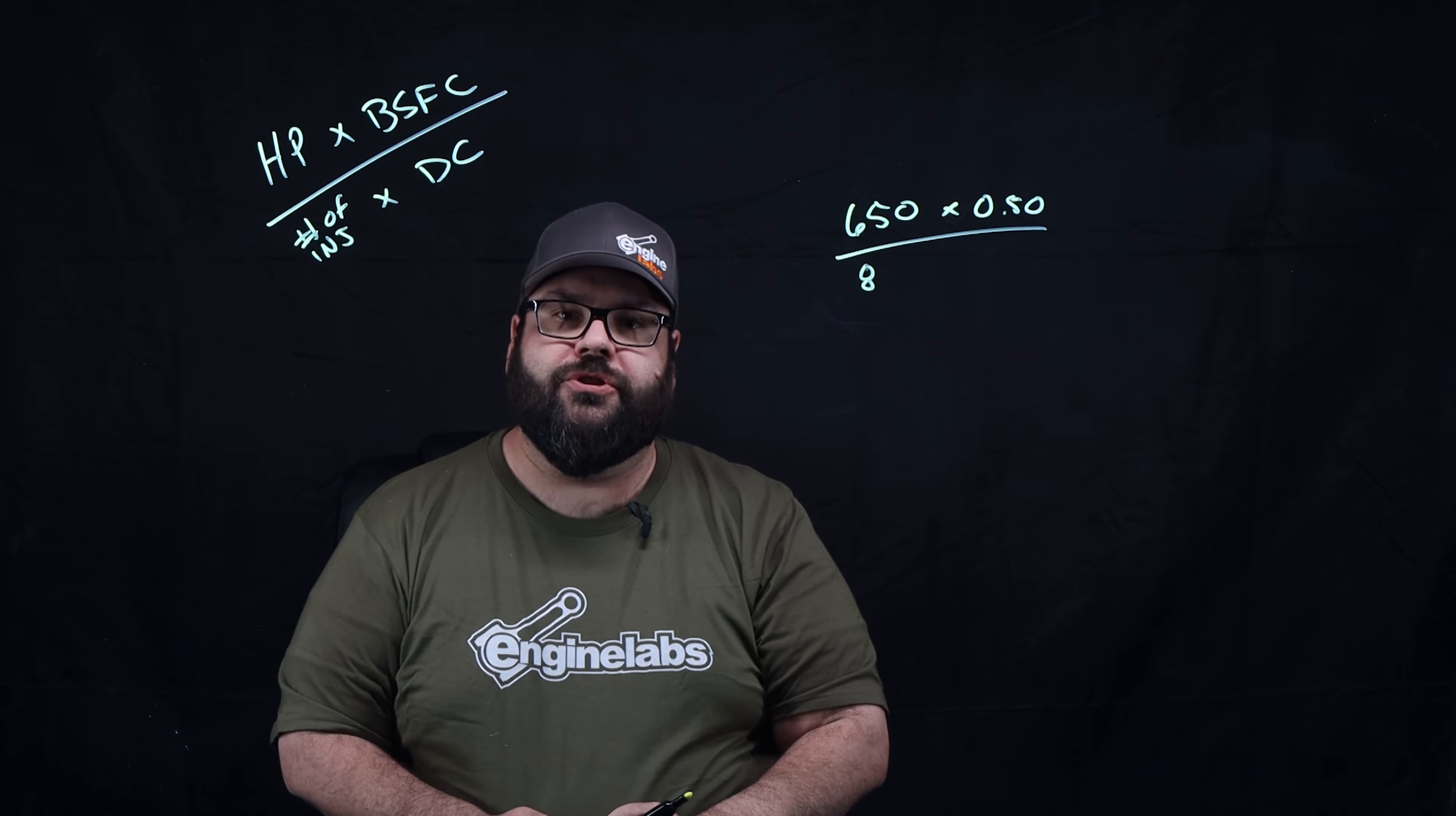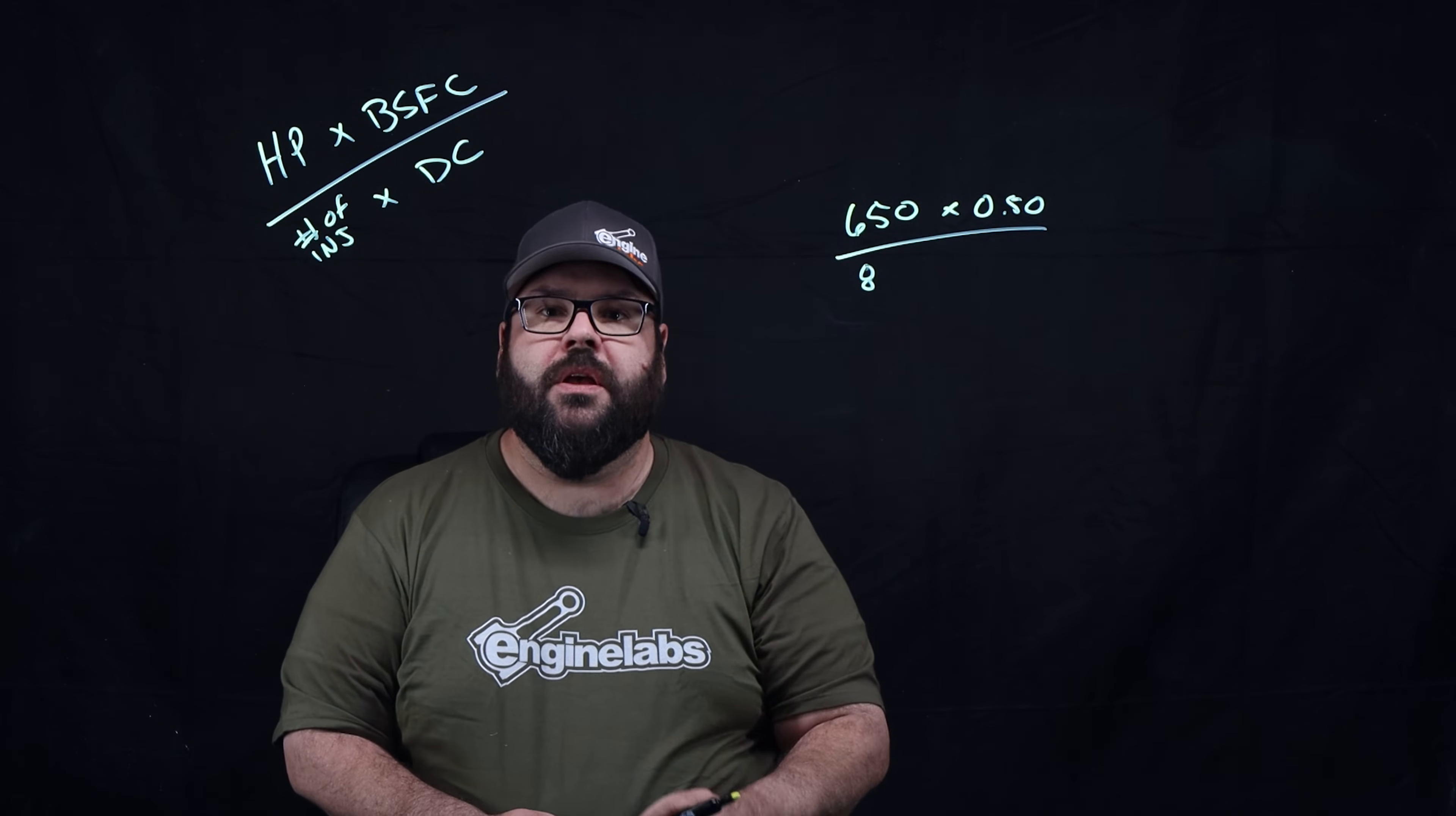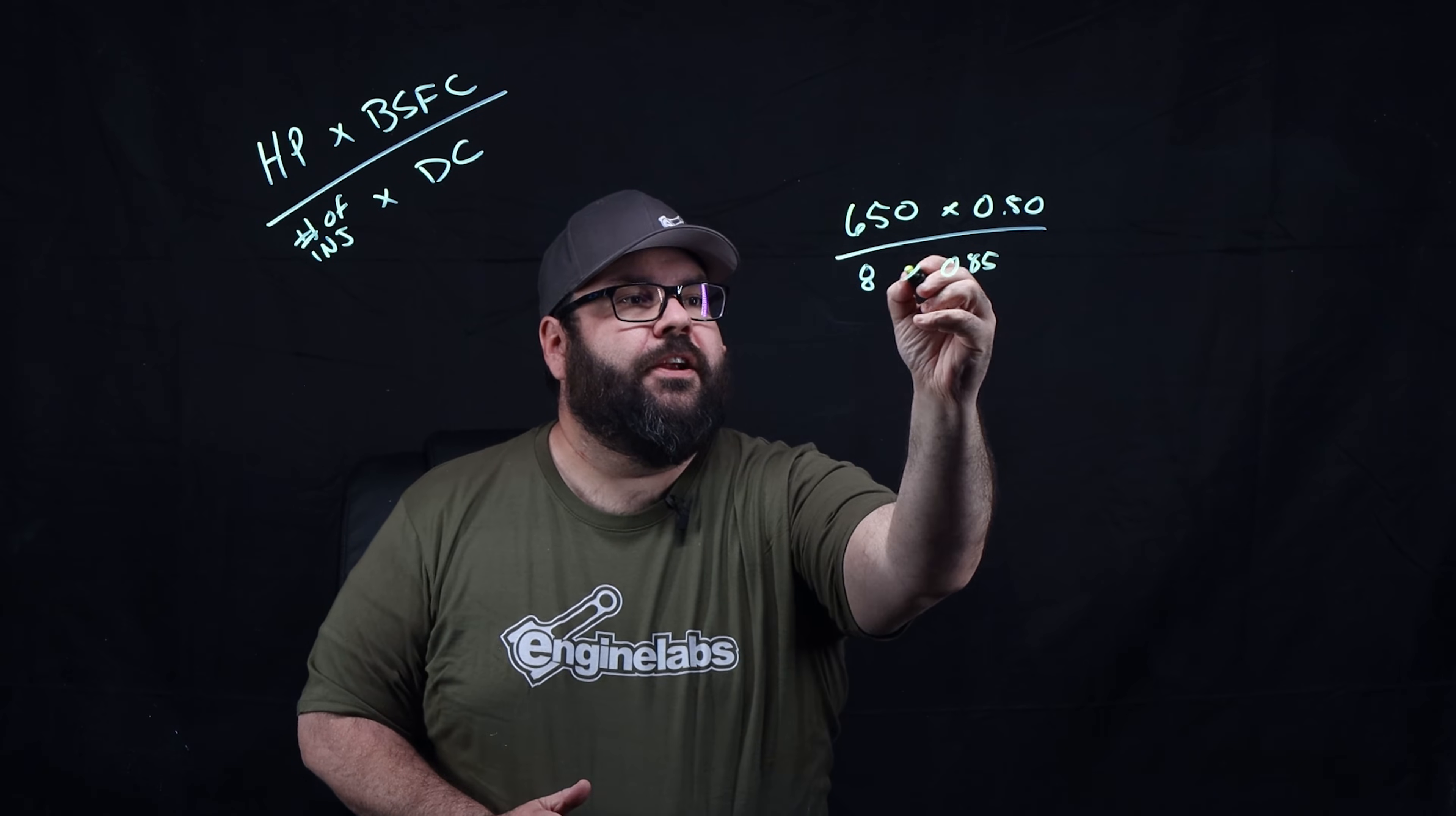This is simply the amount of time the fuel injector is open versus closed, expressed as a percentage. At 50% duty cycle, the injector is on an equal amount of time as it's off. Generally, injector manufacturers suggest a maximum duty cycle of 85%, so we'll use 0.85 here in our calculations.